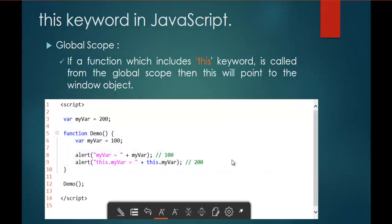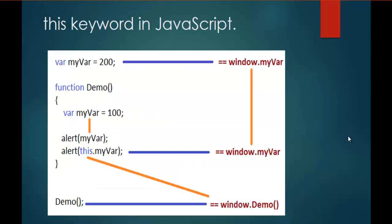To understand this very clearly, I also have a diagrammatic representation. In this figure, you can observe function 'demo' being called from the Global Scope. The Global Scope means in the context of the window object — you can optionally call it as 'window.demo'. In the example, the 'this' keyword inside the demo function refers to the window object.